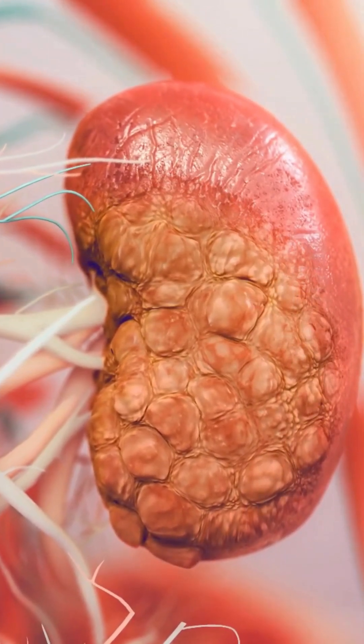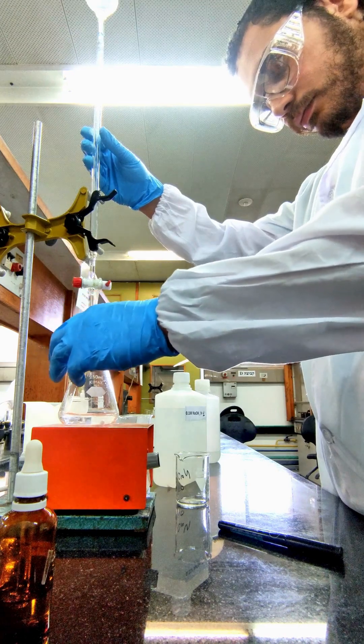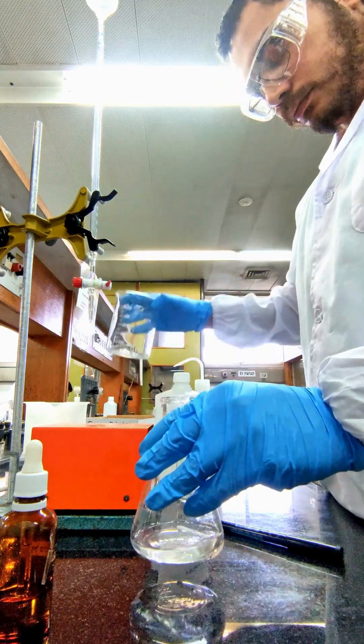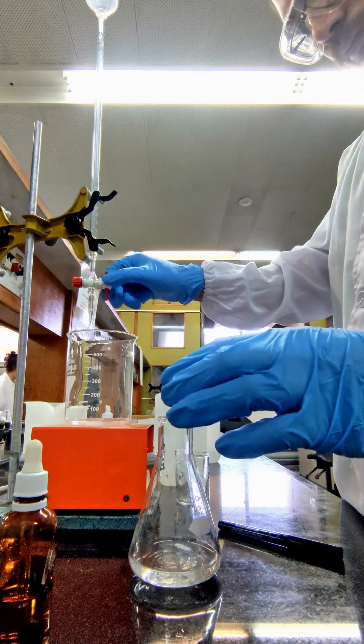Furthermore, the data showed a strong, significant correlation between rising HSCRP and rising albumin levels. R equals 0.793, p less than 0.001.